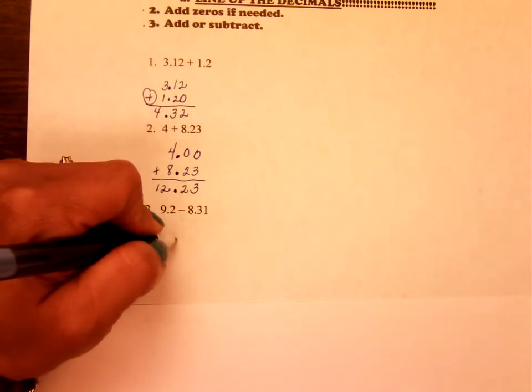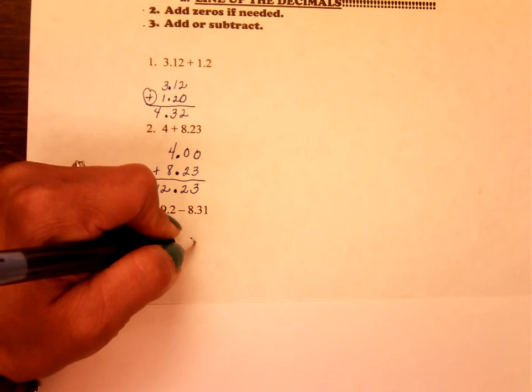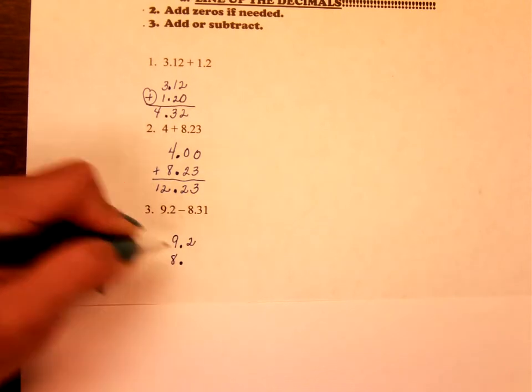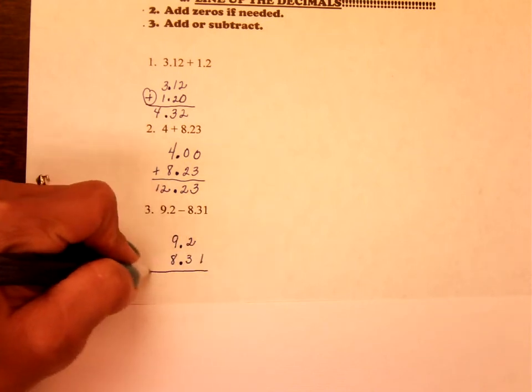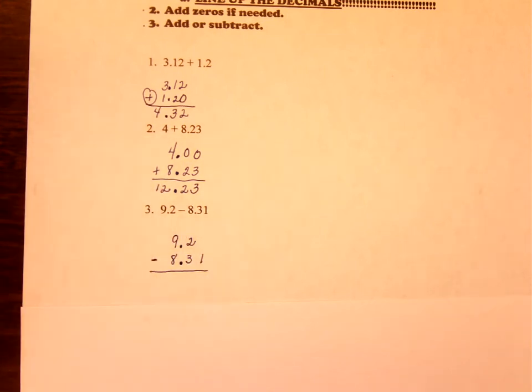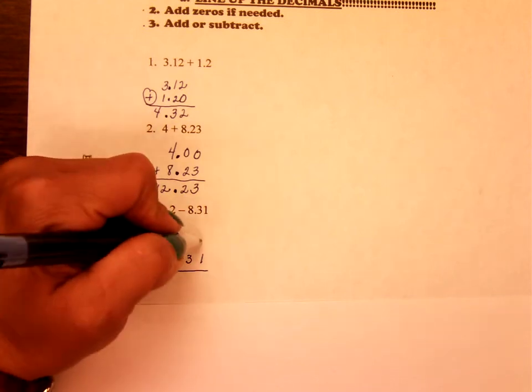So you should have lined up your decimal. So you have 9.2. Put your decimal for the second number. Number 8 is in front of the decimal. And then 31 is after the decimal. You are subtracting. Make sure you know that you're subtracting. Add zeros above the 1.